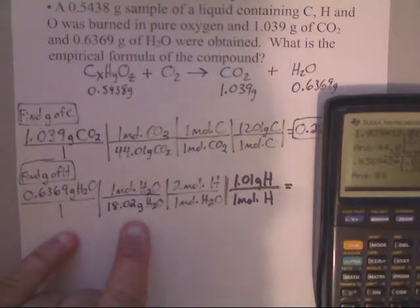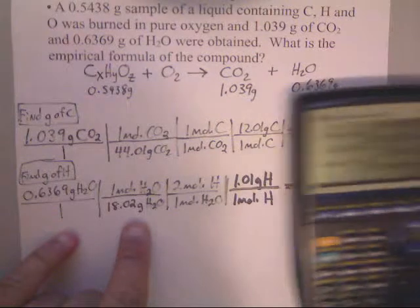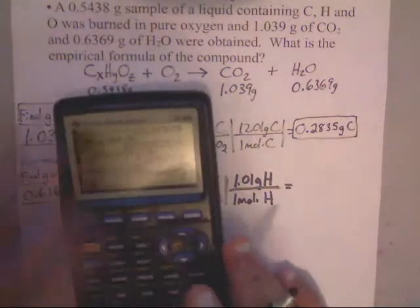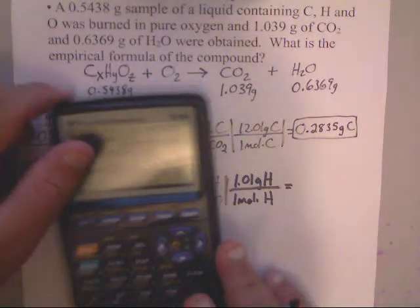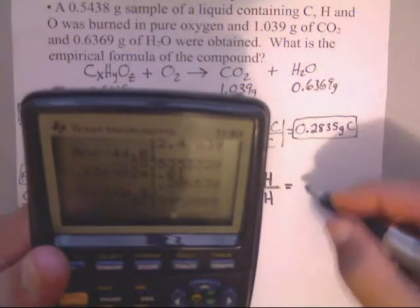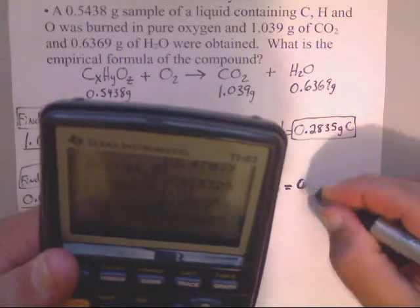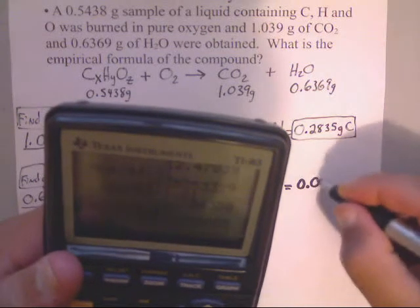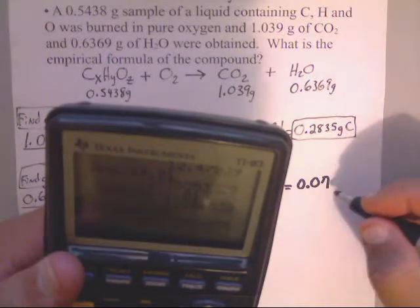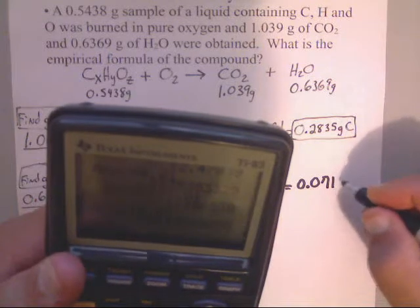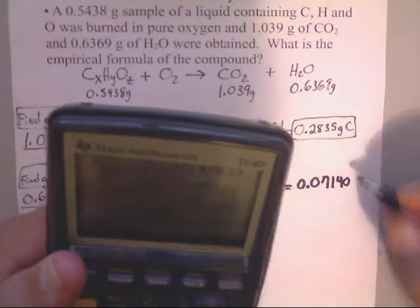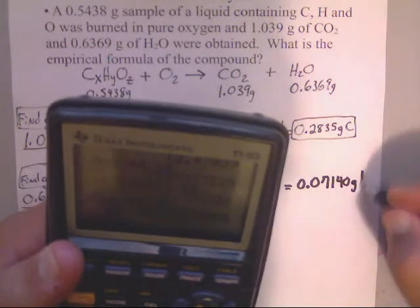I need to keep 4 sig figs. So that gives me 0.07140. And that would be grams of hydrogen. Now, it looks like I'm almost done.